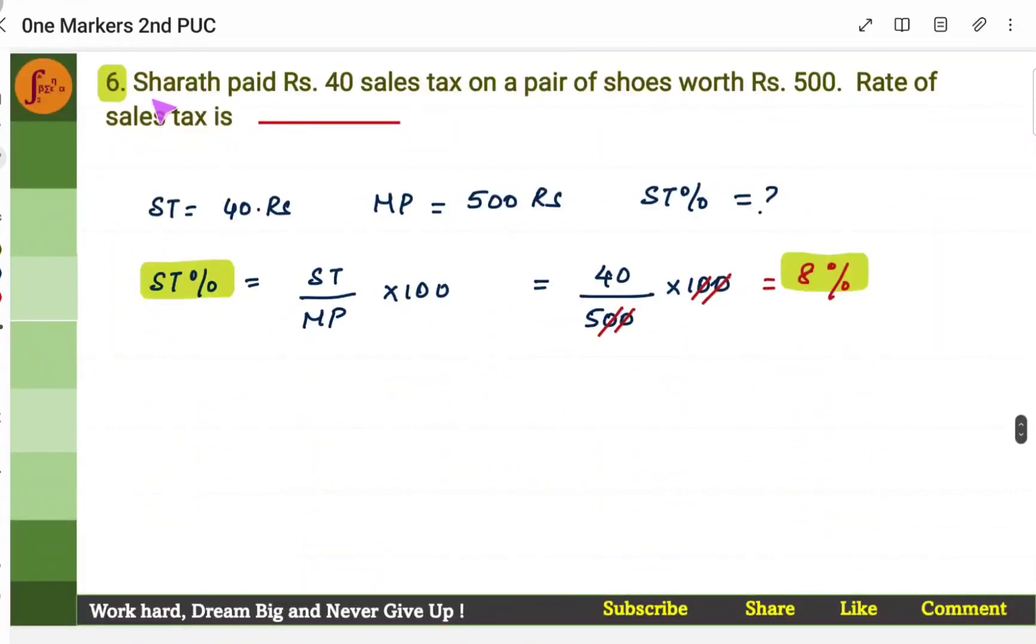Now another question. Sharath paid Rs. 40 sales tax on a pair of shoes worth Rs. 500. So market price of the shoes is Rs. 500. Sales tax is Rs. 40. Rate of sales tax. Rate means you have to find ST percent, sales tax percent. So sales tax percent is ST by MP into 100. ST is 40. MP is 500.